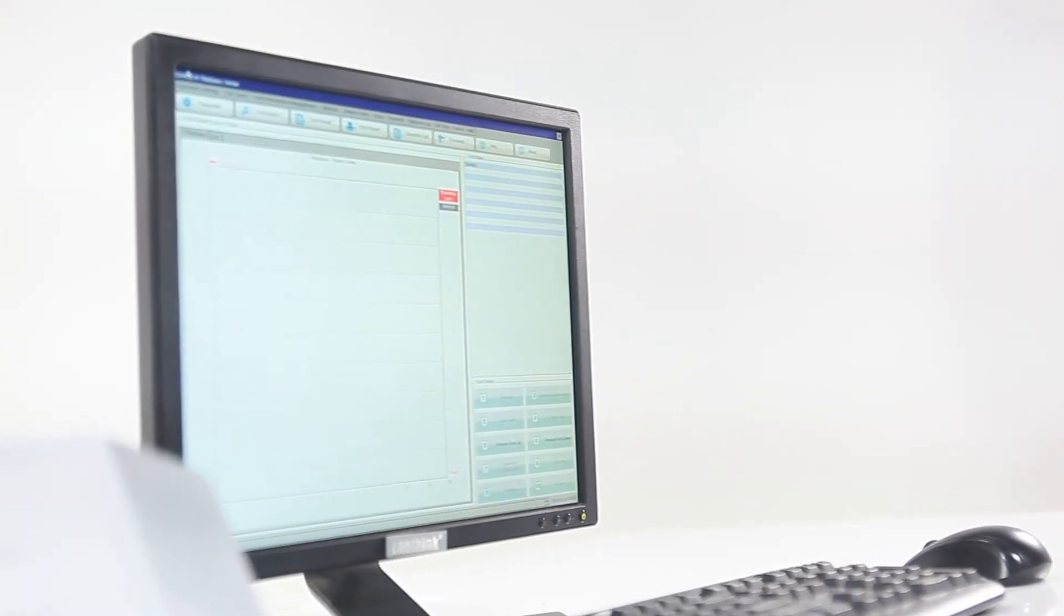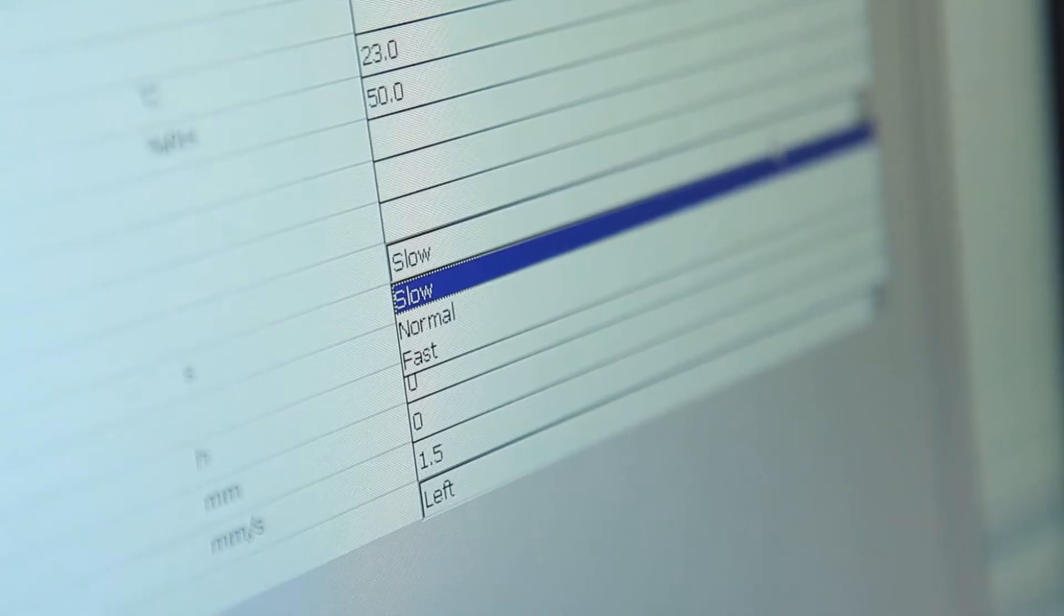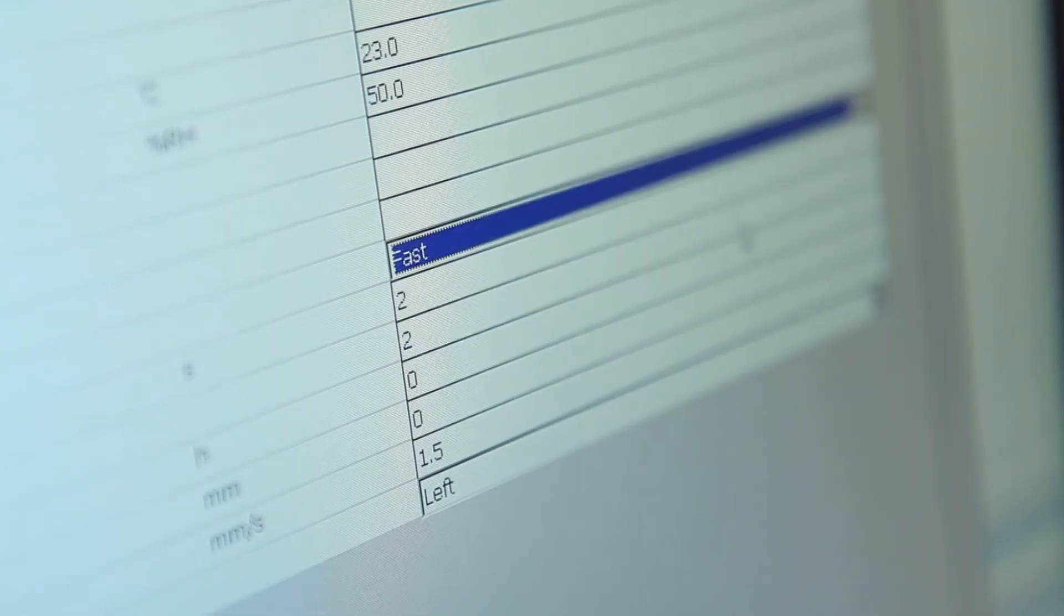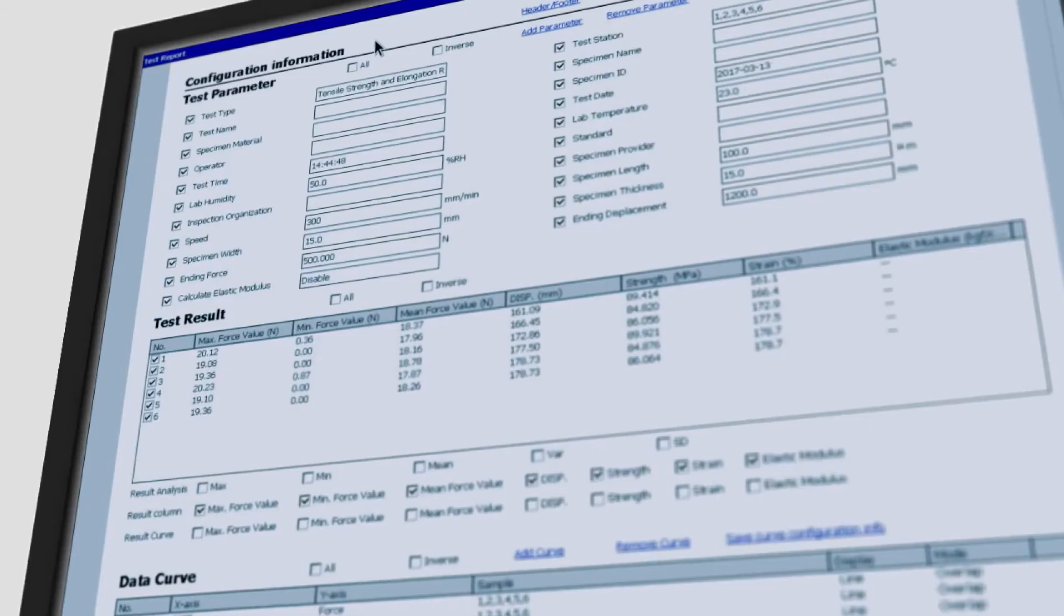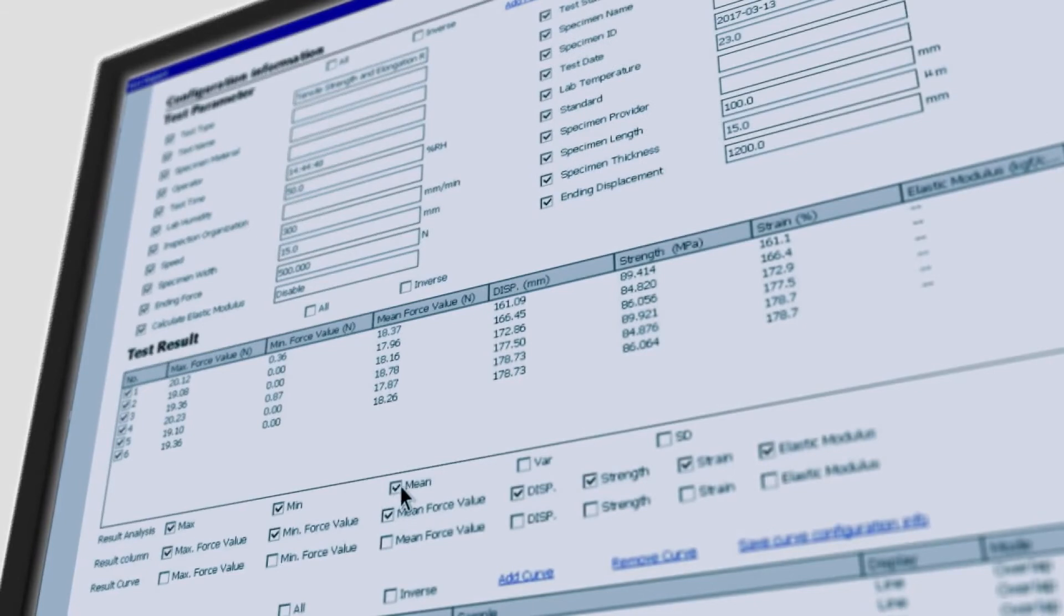C640 supports intelligent control and data processing functions which enables the user to save all test parameters in a file so that parameters can be applied directly for the same tests next time. Test results include maximum value, minimum value, average value, and standard deviation which can be used in historical data comparison.